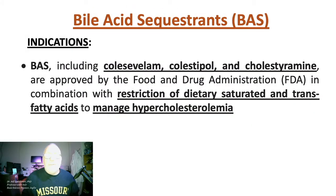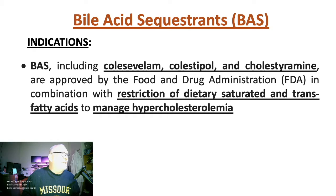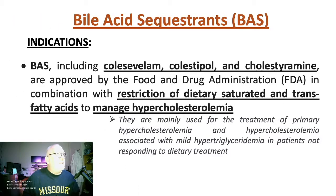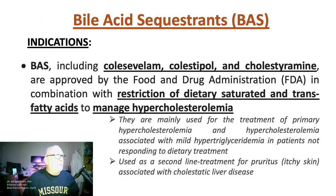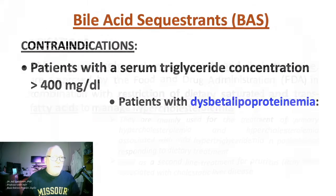Bile acid sequestrants are used to manage hypercholesterolemia. Colesevelam, colestipol, and cholestyramine are used in patients that don't typically respond well to dietary treatments. There's also a second-line treatment for pruritus — itchy skin — associated with cholestatic liver disease.